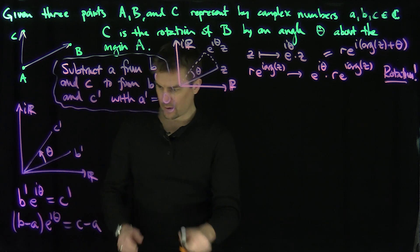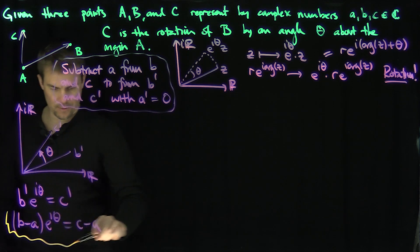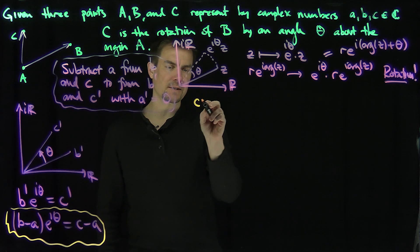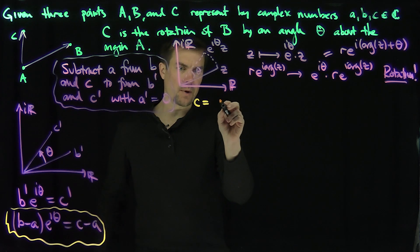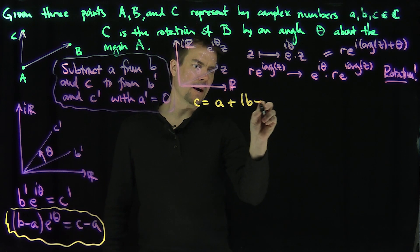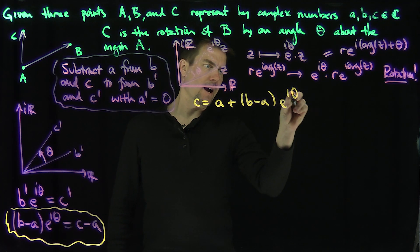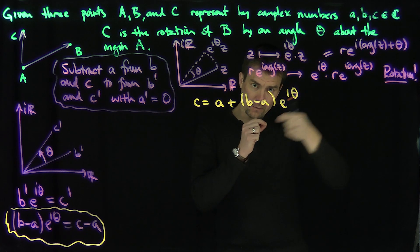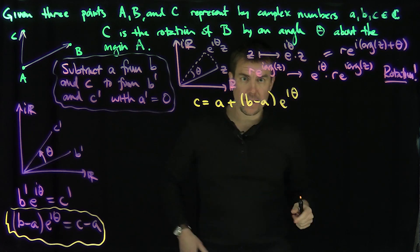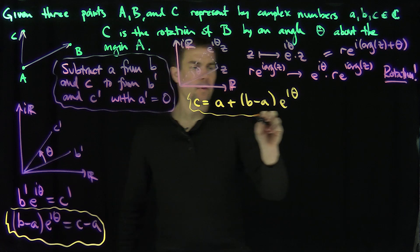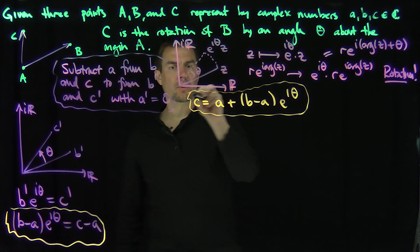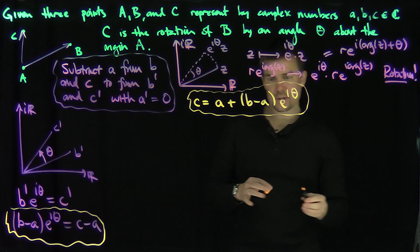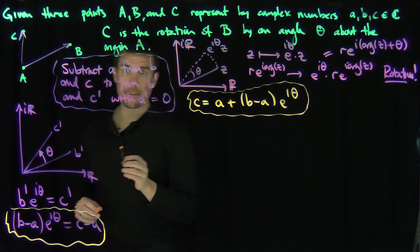So we have our formula. If we rewrite that expression, C is equal to A plus (B minus A)·e^(iθ). In other words, we're taking the point B, shifting the origin back over to A, and then rotating by an angle of theta. That was a fairly simple rotation construction. Now, how can I use this in a geometry problem? Here's a classical example.